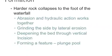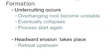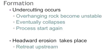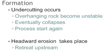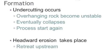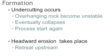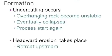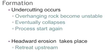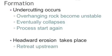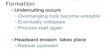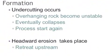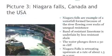Another way waterfall formation could take place: undercutting occurs due to erosion of the softer rocks. The overhanging rock becomes unstable and eventually it collapses. Again, the process starts again — headward erosion takes place, with the waterfall retreating upstream.